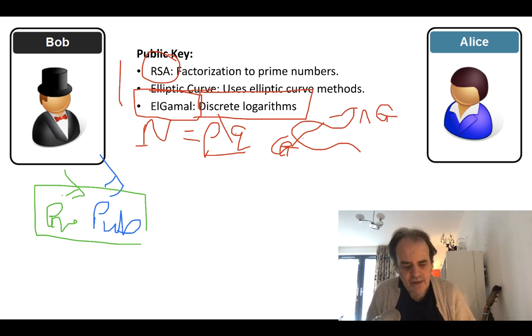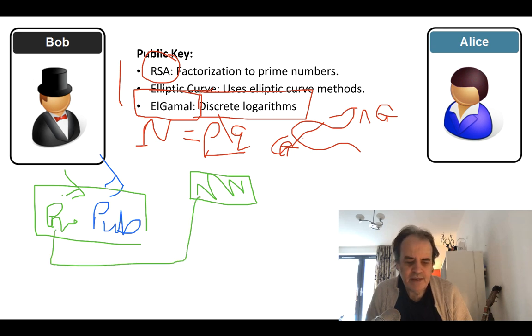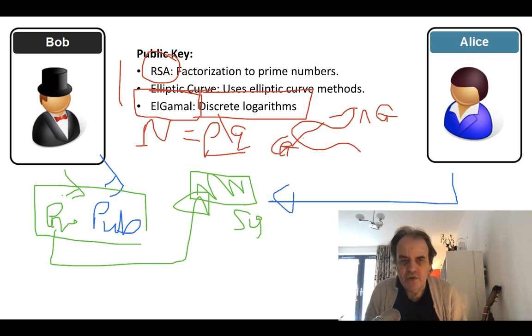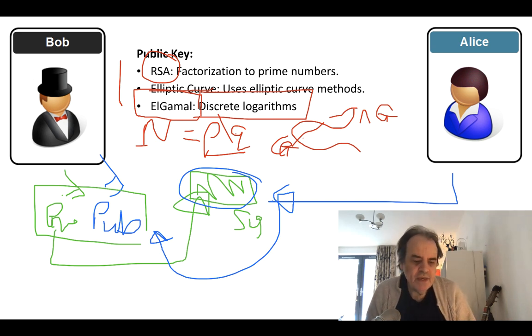The two main places that we use public key encryption is to sign for something. So we might have some data. We can then encrypt that data with our private key, and that gives us a signature. Then Alice can decrypt that signature with Bob's public key and check the data. So in this way, Bob can prove his identity with the signing key, his private key.